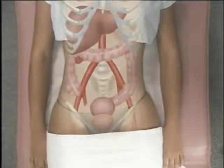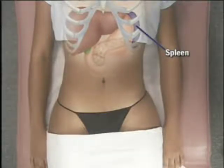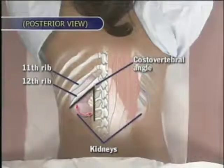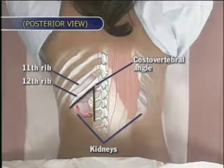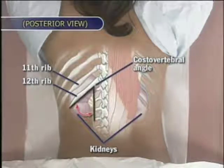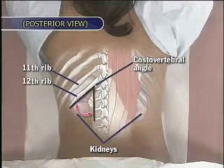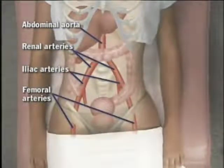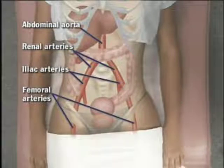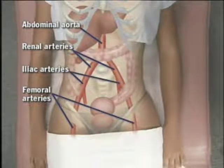The abdominal cavity extends up under the rib cage to the dome of the diaphragm. Most of the liver and stomach, and usually all of the spleen, are within the abdominal cavity. The normal spleen is mostly posterior to the left mid-axillary line. The kidneys lie posteriorly, partly protected by the posterior ribs. The right kidney is slightly lower than the left. To assess for kidney tenderness, locate the costovertebral angles — posterior to and below the 12th ribs, lateral to the vertebrae. The abdominal aorta bifurcates into the iliac arteries below the umbilicus; as they pass under the inguinal ligaments, they become the femoral arteries.